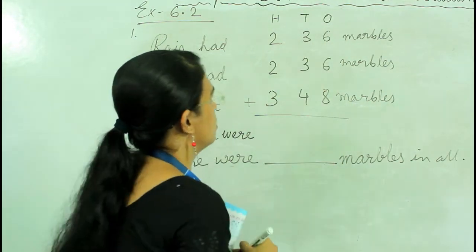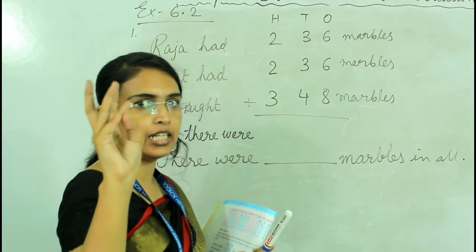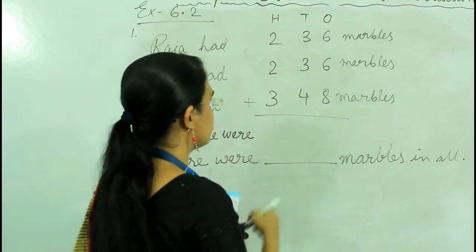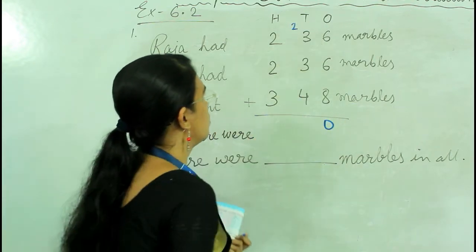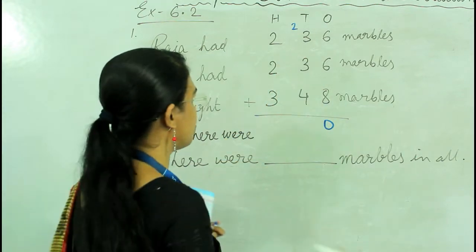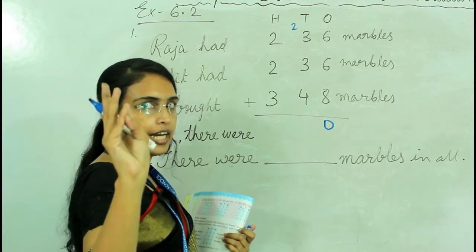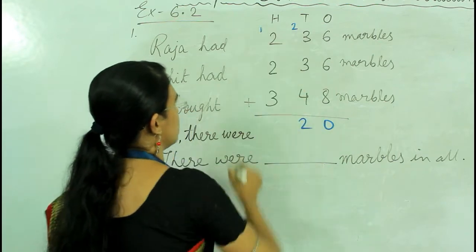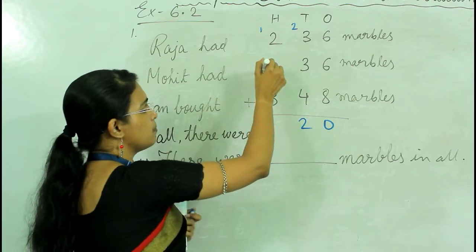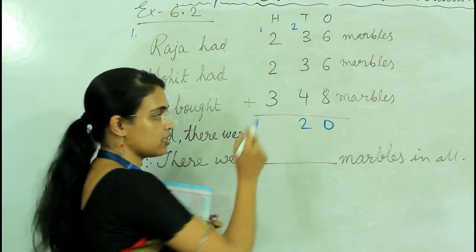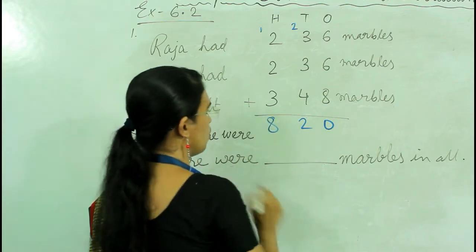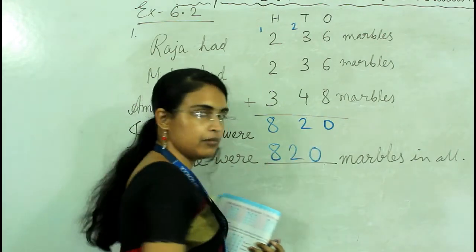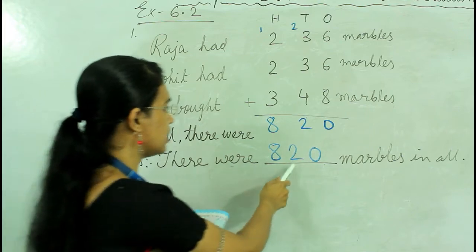Add the ones: 8 plus 6 plus 6 is 20, write 0 carry 2. Tens: 3 plus 3 plus 4 plus carry 2 is 12, write 2 carry 1. Hundreds: 2 plus 2 plus 3 plus carry 1 is 8. So altogether they have 820 marbles in all. Write 820 in the blank.